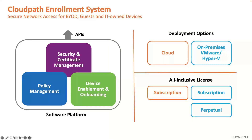As far as what the software does, it includes three components. There's a security and certificate management piece — CloudPath is a full public key infrastructure and a certificate authority that can issue certificates. It can also do policy management, classifying users into different policies based on security groups. And then there's device enablement and onboarding, which gets devices on the network.